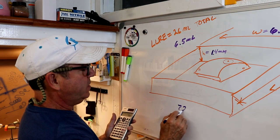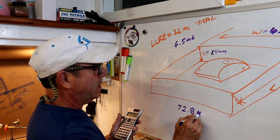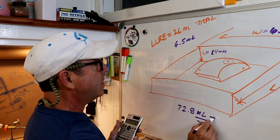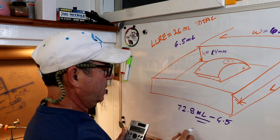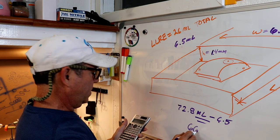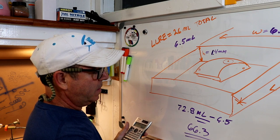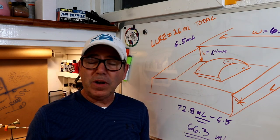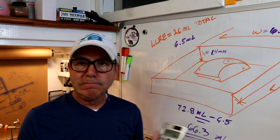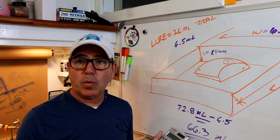And it's 72.8 milliliters and I need to subtract 6.5 so it's 66.3 milliliters. We'll go ahead and pour probably 70 milliliters and pour this last portion.